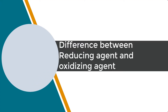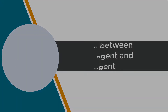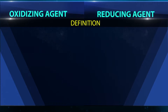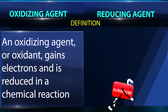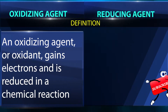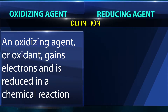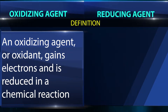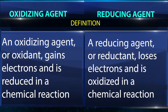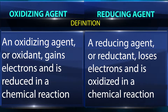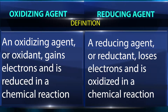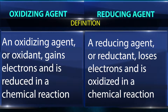The difference between a reducing agent and an oxidizing agent. Definition — oxidizing agent: an oxidizing agent, or oxidant, gains electrons and is reduced in a chemical reaction. Definition — reducing agent: a reducing agent, or reductant, loses electrons and is oxidized in a chemical reaction.